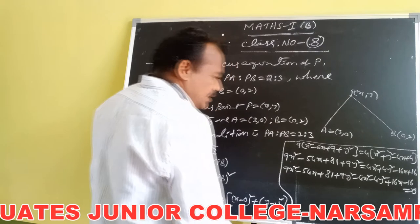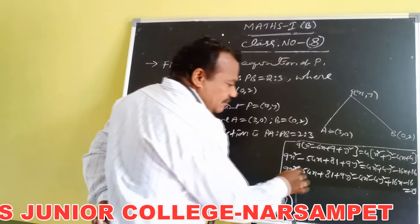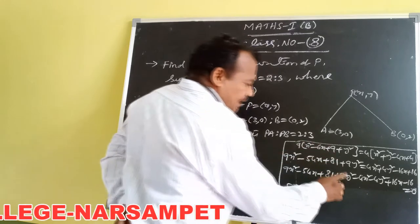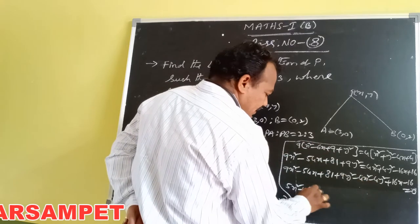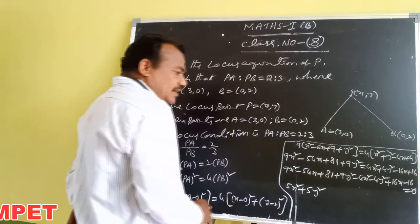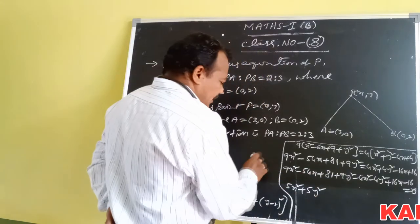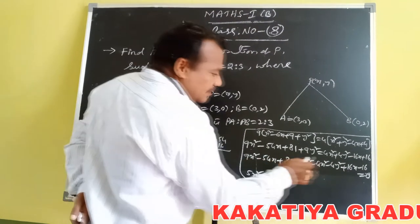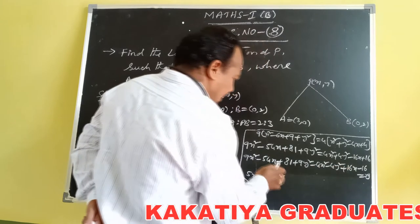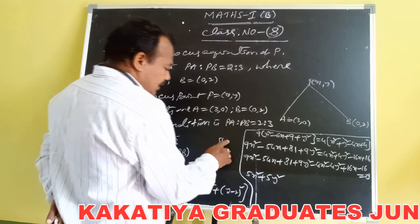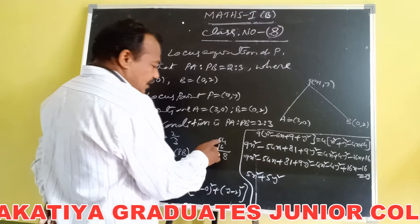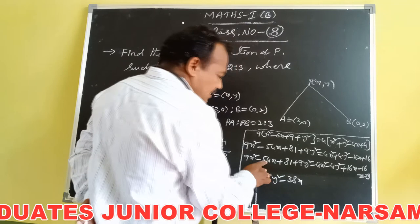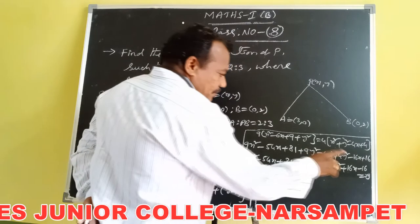Simplifying: 9X squared minus 4X squared gives 5X squared; 9Y squared minus 4Y squared gives 5Y squared. For the X terms, minus 54X plus 16X gives minus 38X.